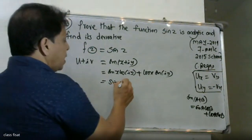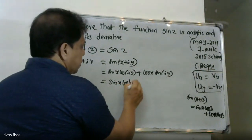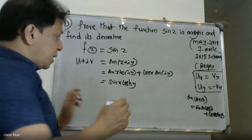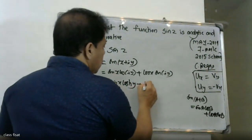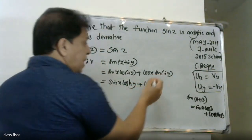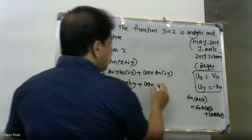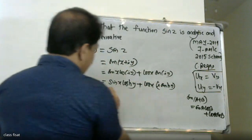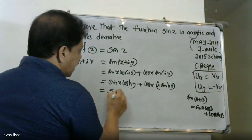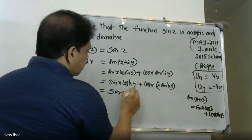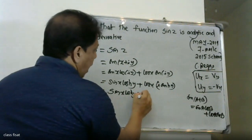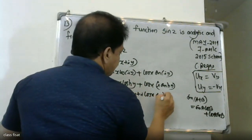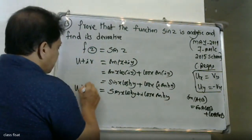Expanding further, sin(x)cos(iy) plus cos(x)sin(iy) simplifies to sin(x)cosh(y) plus i times cos(x)sinh(y), giving us the form u plus iv.